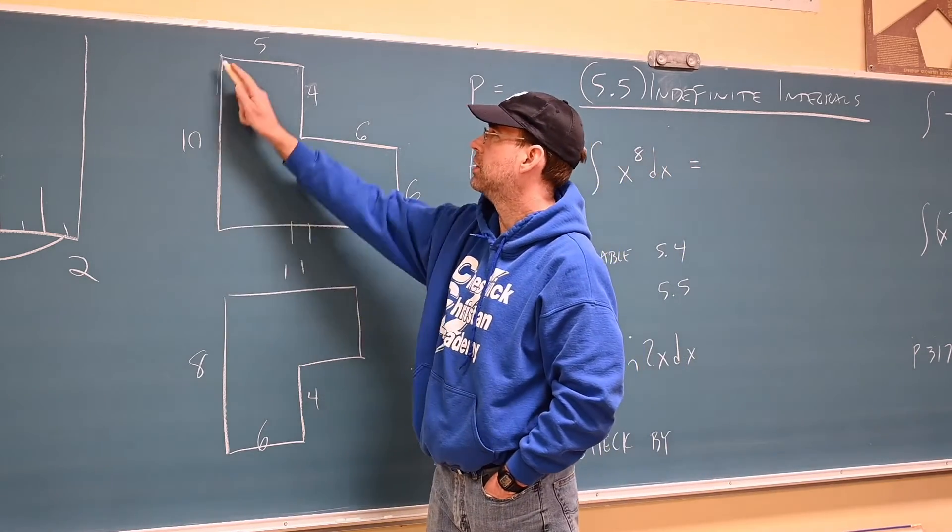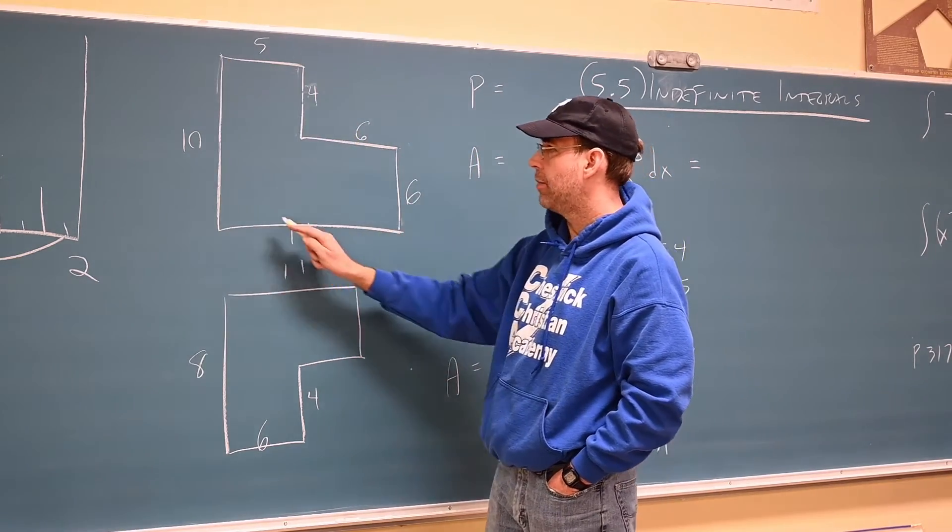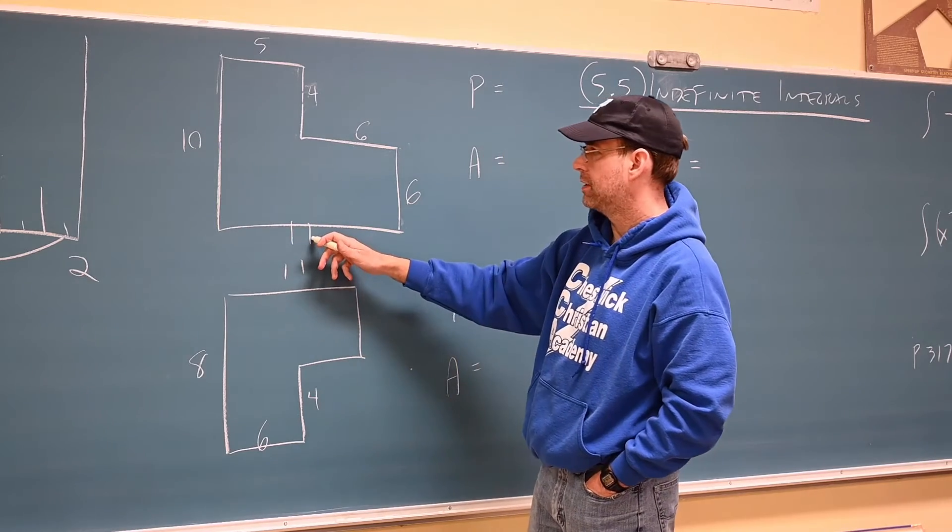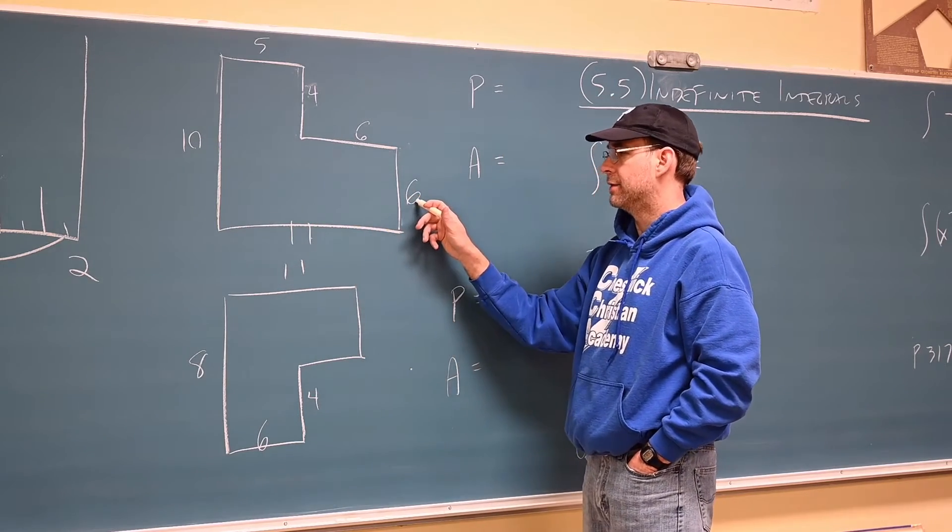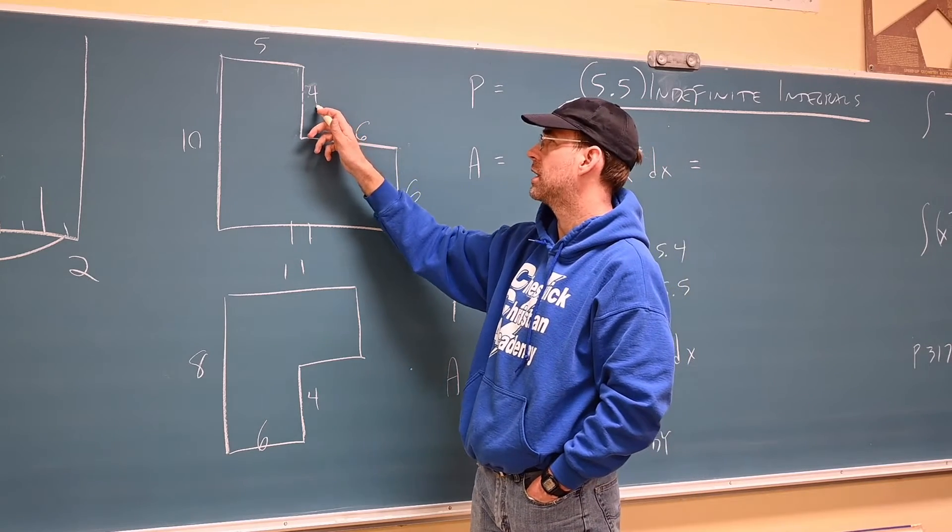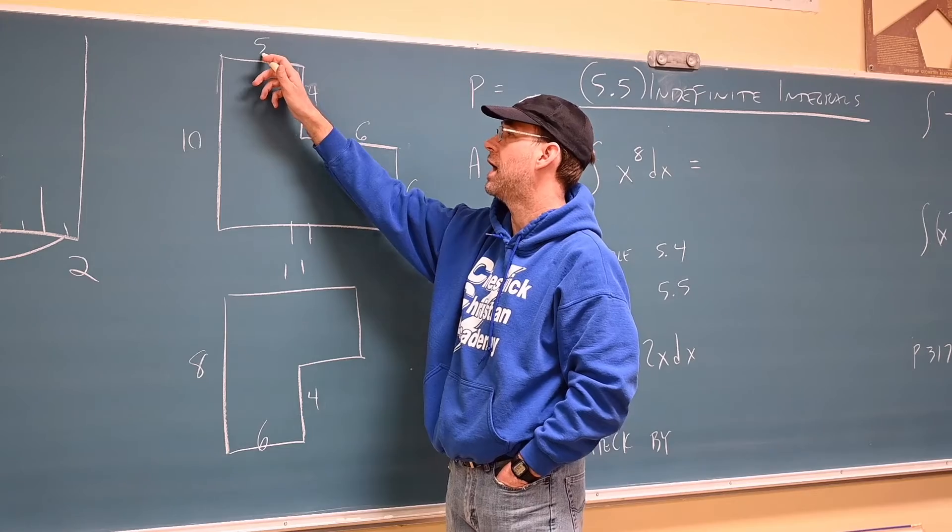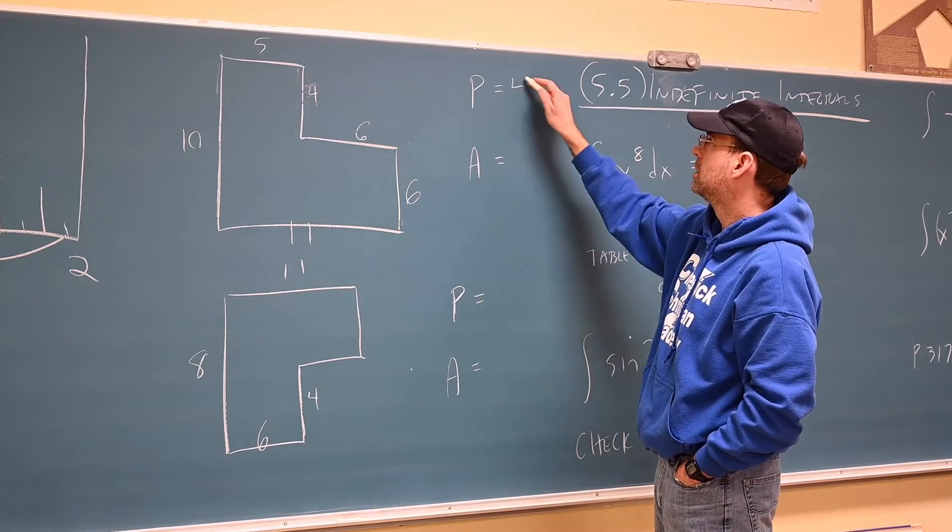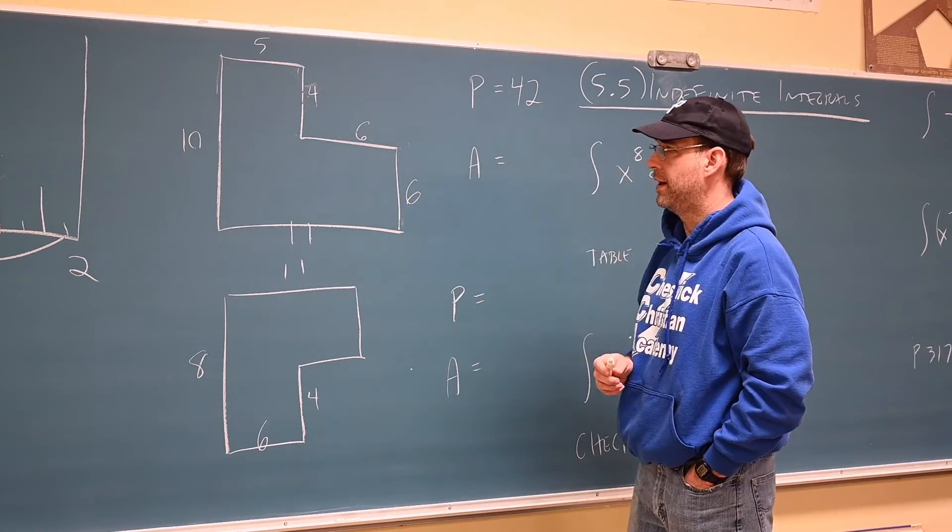Once we have the missing numbers to do perimeter we add everything up. 10 plus 11 is 21. Another six is 27. Another six is 33. Another four is 37. Another five. We're up to 42. So perimeter there is 42.